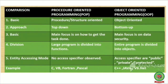Number 5: In Procedure Oriented Programming, no access specifiers are used like public, private, or protected. In case of Object Oriented Programming, access specifiers are used like public, private, and protected, so data is not moved freely throughout the program. Examples of Procedure Oriented Programming languages: C, Visual Basic, FORTRAN, and Pascal. Examples of Object Oriented Programming: C++, Java, and VB.NET.